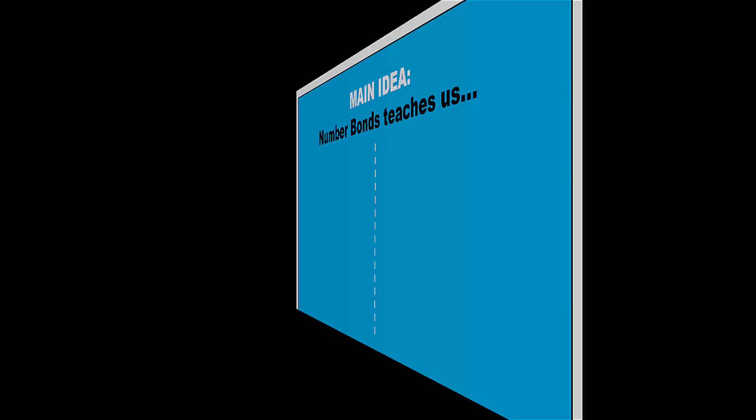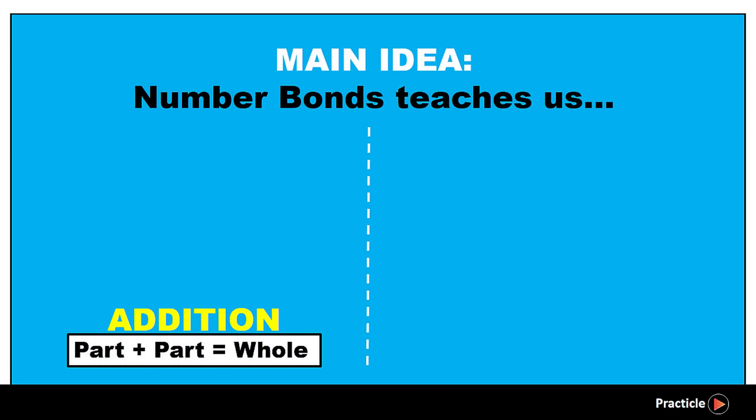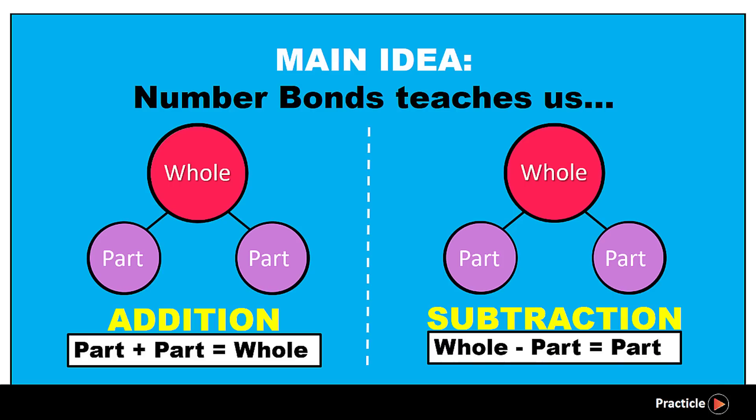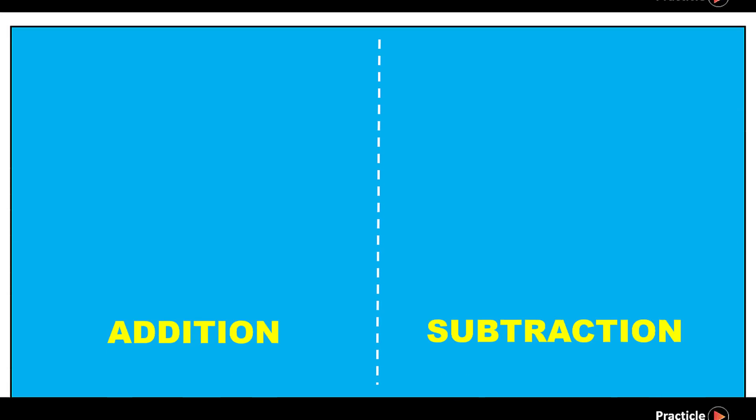To write an addition statement, we will add the parts to give us the whole. And to write a subtraction statement, we will subtract a part from the whole to find the missing part. And this is another useful thing about number bonds. Depending on the situation and what we have, we can use these number bonds to help us decide if we should add or subtract.